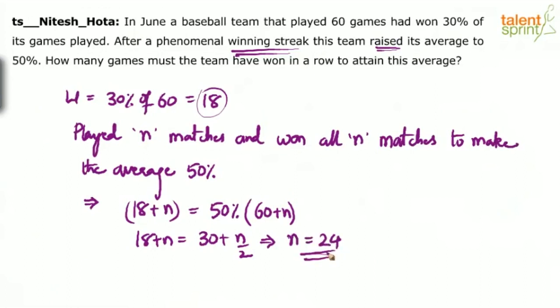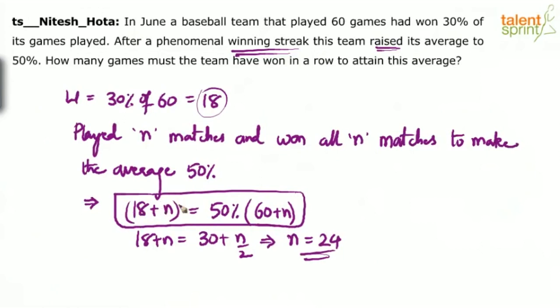Clear? This is a very important equation. The number of matches that they have won — 18 in the earlier phase and N matches in the second phase — equals 50% of the total matches they have played. 60 matches were played in the first phase and N matches in the second phase. That gives you 24.